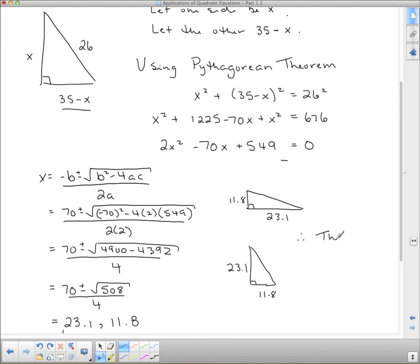So, we can say, therefore, the other two sides are 23.1 and 11.8. And those do add up to 35, although we may have a rounding error right there. But, that concludes that example. And that concludes your lesson for today.